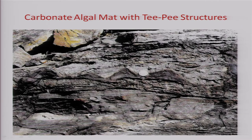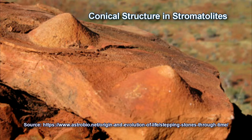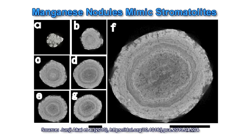There is another example of an algal mat that forms a very interesting structure called a TP structure. Here you can see a conical structure over horizontal algal laminae — a special type of cyanobacteria produces this structure as an indicator of a particular depth condition in shallow marine environments. In contrast, there are also manganese nodules found in deep oceanic conditions which mimic stromatolites, but they are not true stromatolites or algal structures, though they can be confused with stromatolites on a photograph or specimen.